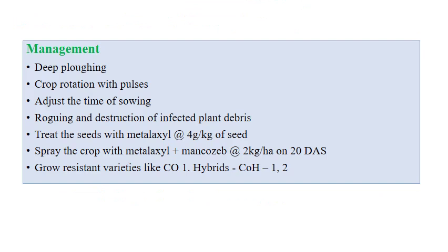Coming to management practices: deep plowing, crop rotation with pulses, adjusting the time of sowing, and roguing and destruction of infected plant debris are recommended. Seed treatment with metalaxyl at the rate of 4 grams per kilogram of seeds, and spraying the crop with metalaxyl plus mancozeb combination at the rate of 2 grams per hectare at 20 days after sowing. Resistant varieties like Co1 and hybrid Co1 and Co2 are recommended for crazy top.